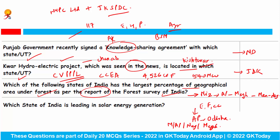Which states still have the highest total forest cover? It is Madhya Pradesh, followed by Arunachal Pradesh, then Chhattisgarh, then Odisha, and then Maharashtra.